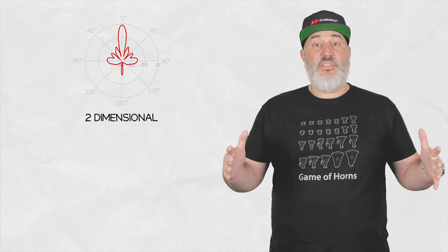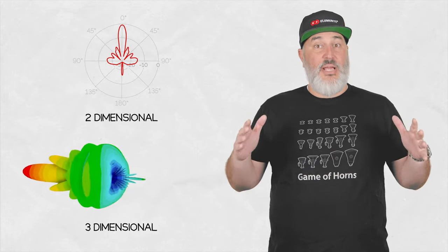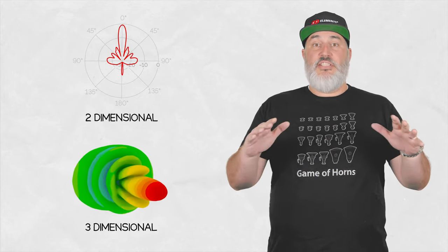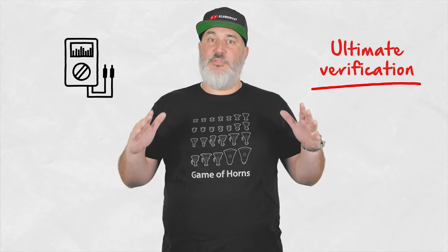An antenna radiation pattern is a representation of the radiation characteristics of an antenna. It describes how an antenna radiates energy into space in different directions. While antenna simulation can provide very accurate results, measurement is the ultimate verification of an antenna's performance.